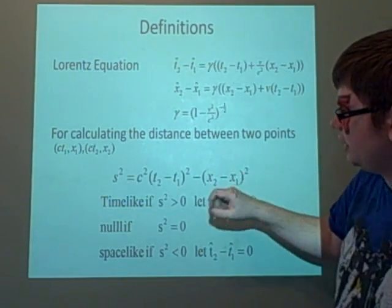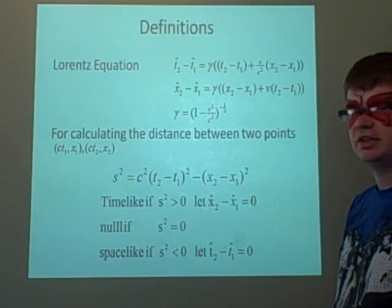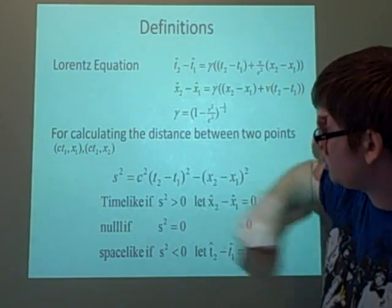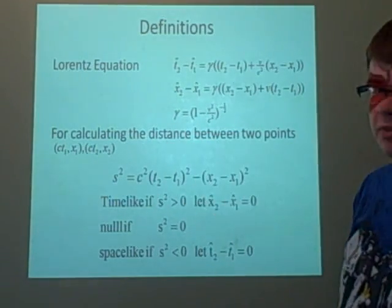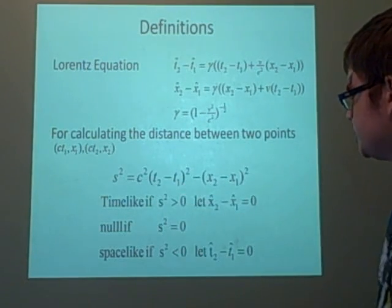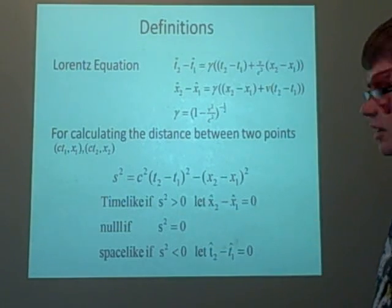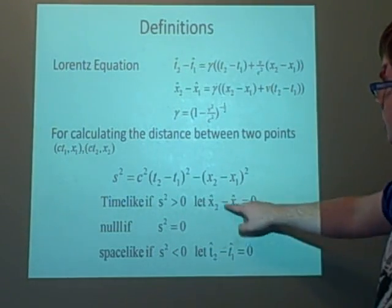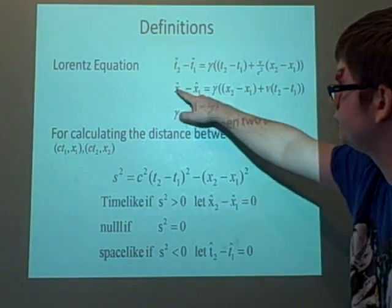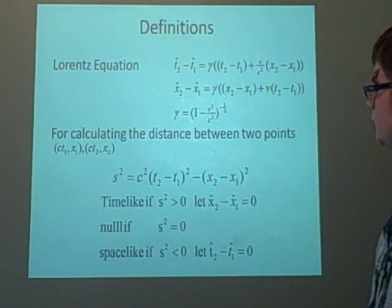If s² is positive, we say it's time-like - called time-like because the time part is greater than the space part. We can solve this by setting x₂-hat minus x₁-hat equal to 0, using that line of the Lorentz equation, and solving for v to find the velocity.